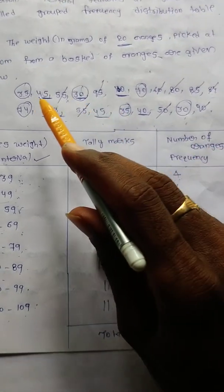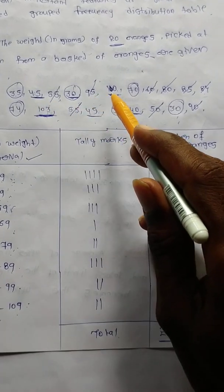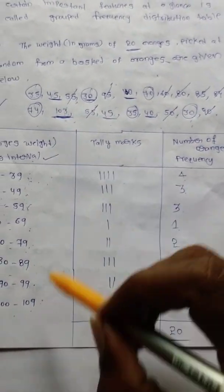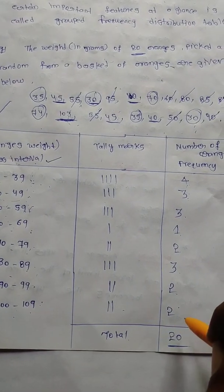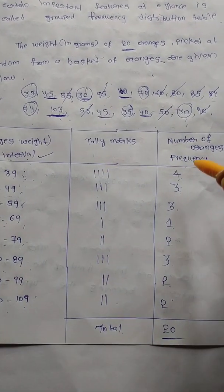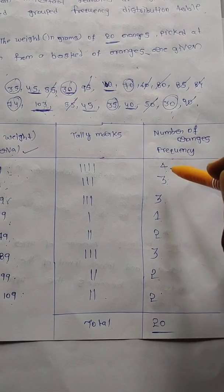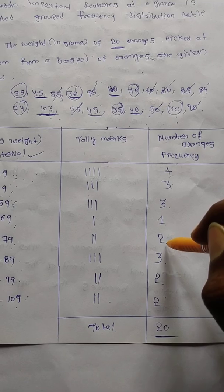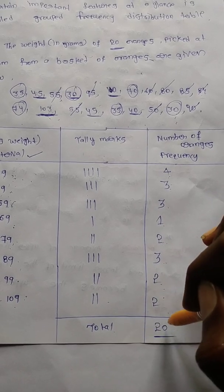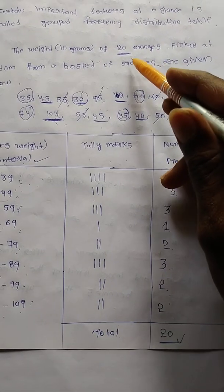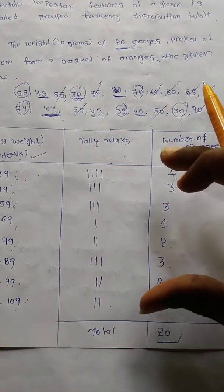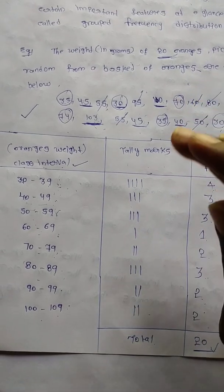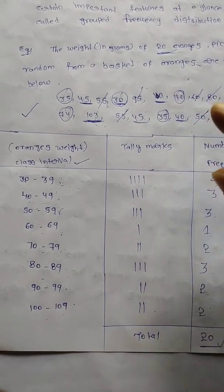After completing the table, count the total: 4+3=7, +5=12, wait — 4+3+5+1+2+3+2+2 = 20. There are a total of 20 oranges, confirming the answer is correct. This is the grouped frequency distribution table.